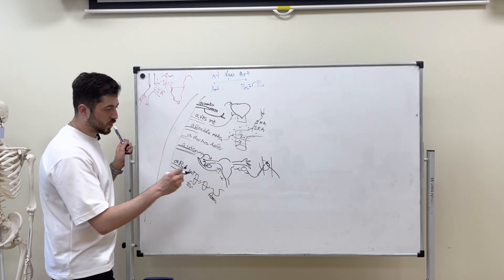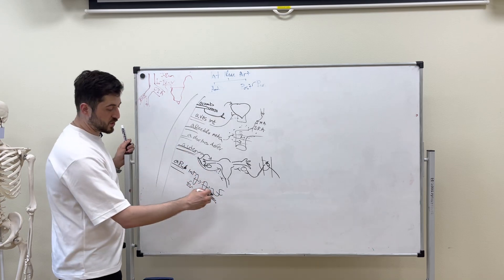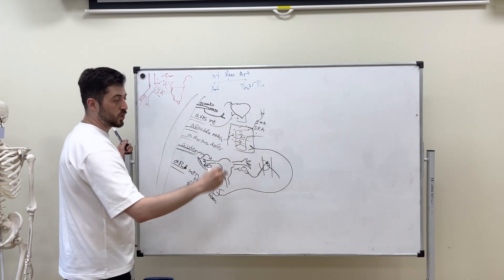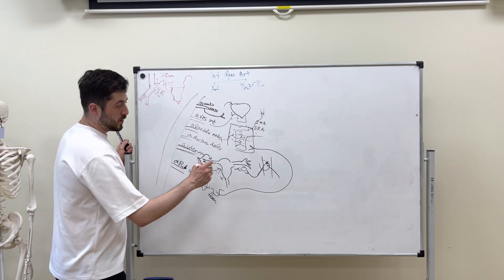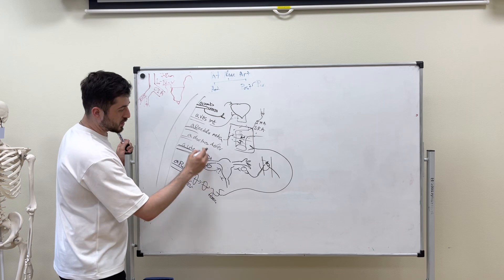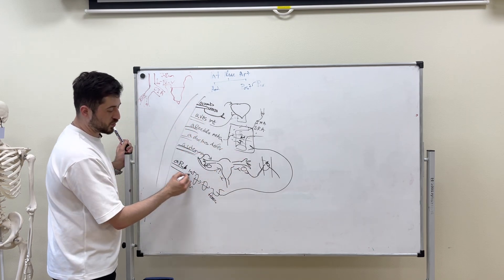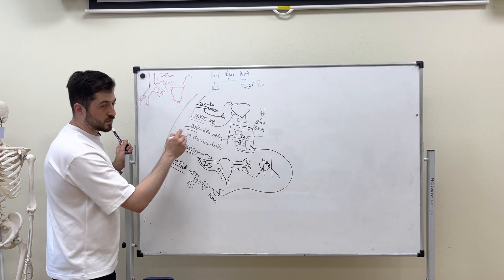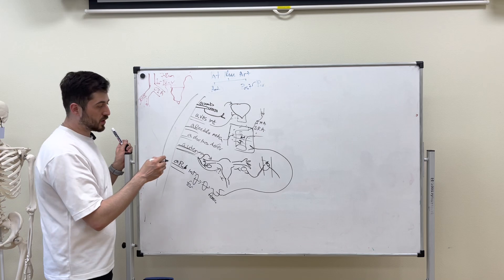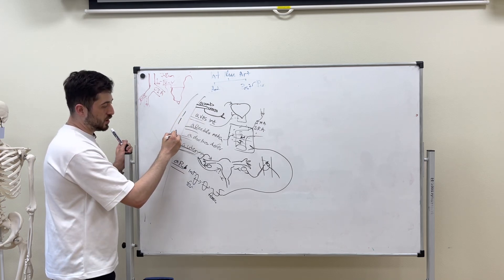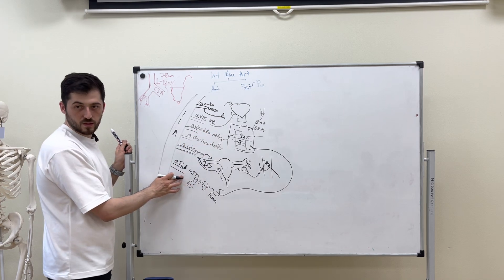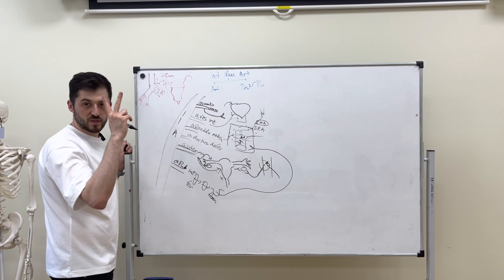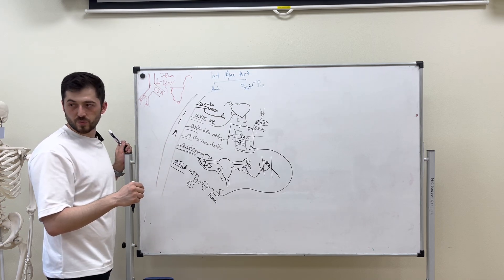In the fossa ischiorectalis, arteria pudenda interna gives several branches. The first branch is arteria rectalis inferior, which fully supplies the inferior rectum with blood. There is anastomosis between rectalis media — from the iliac artery — and rectalis inferior — from pudenda interna — and also with rectalis superior. This is called intrasystemic anastomosis within the internal iliac system, and intersystemic anastomosis between the inferior mesenteric artery system and the iliac artery system.